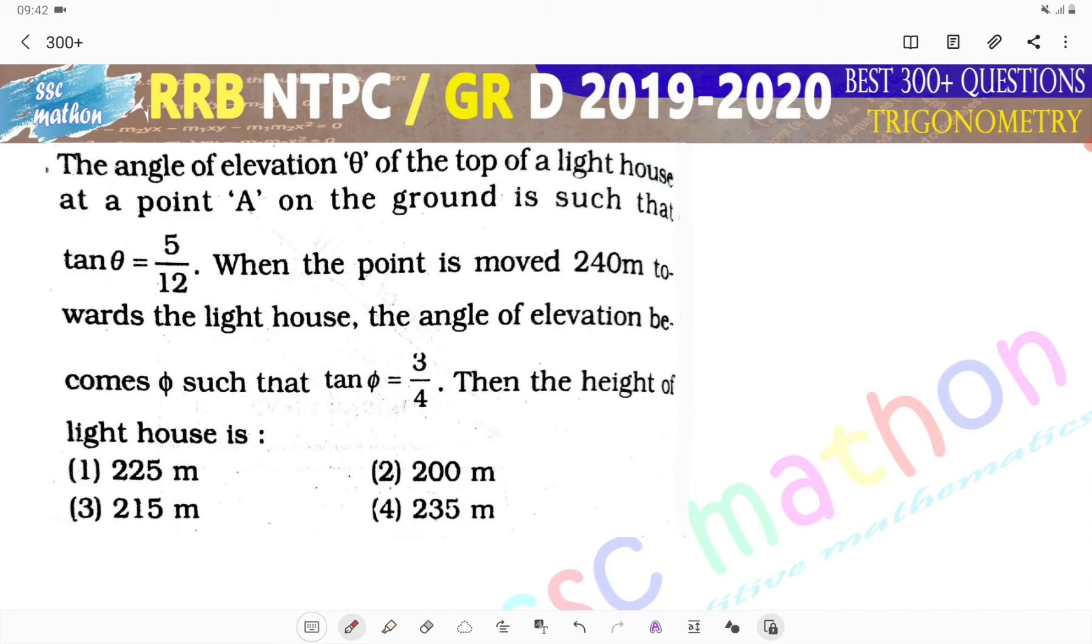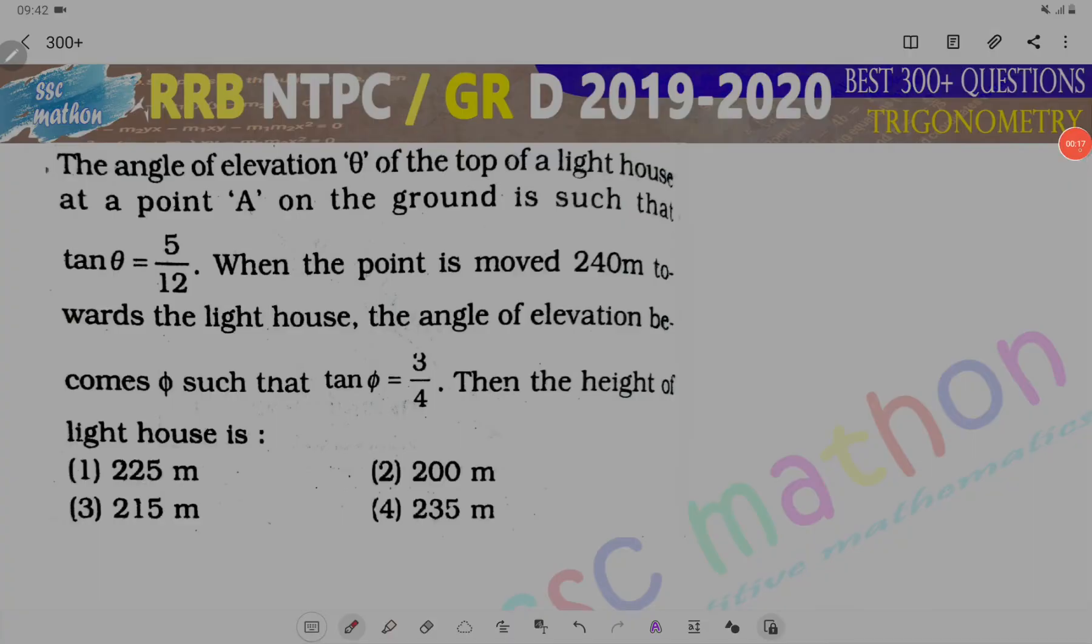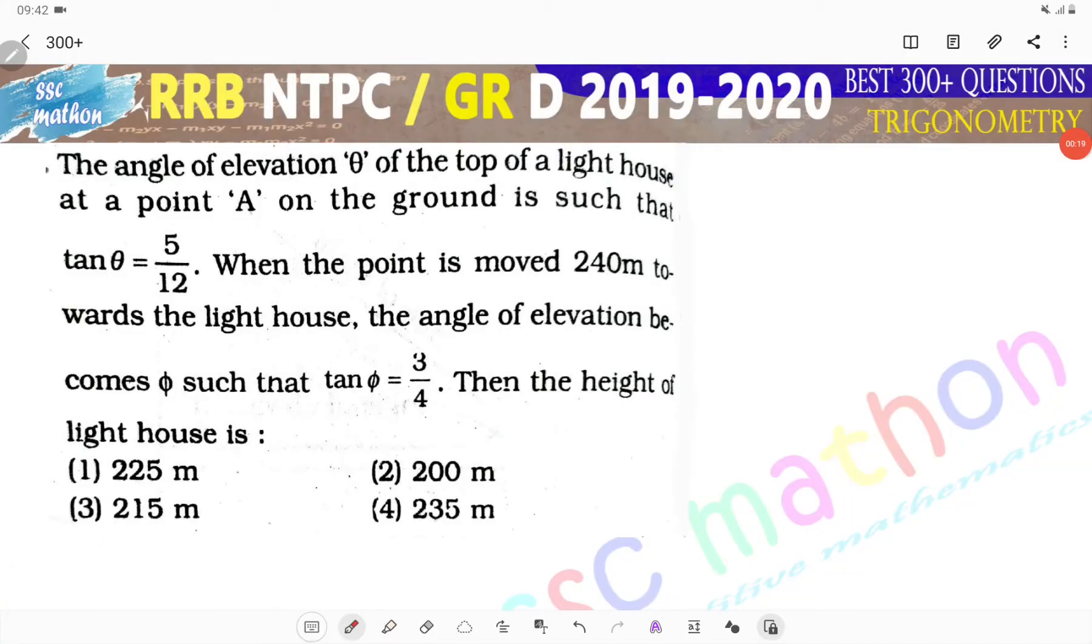The angle of elevation theta of the top of a lighthouse at a point A on the ground such that tan theta equals to 5 by 12. When the point moves 240 meter towards the lighthouse, the angle of elevation becomes phi such that tan phi equals to 3 by 4. The height of the lighthouse is given. What is given?